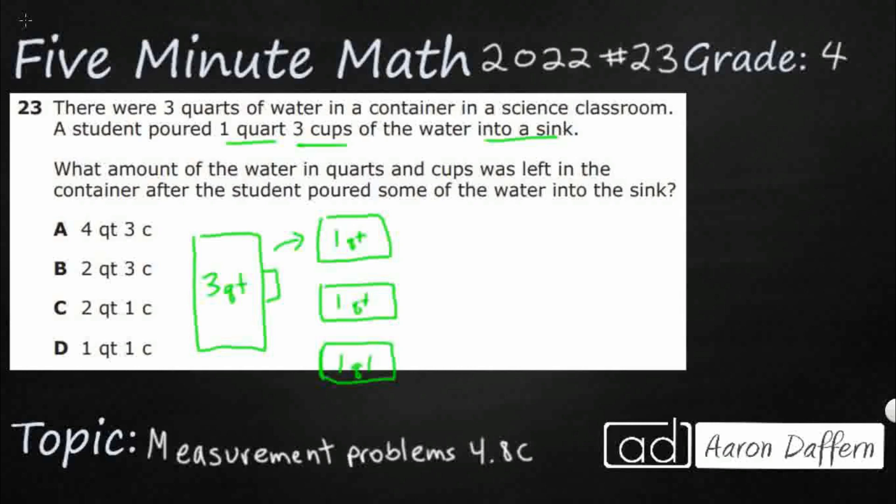Now we need to get into our mathematics chart, our formula chart, to see how we can convert these quarts. And what we find is that we've got two pints equal one quart.